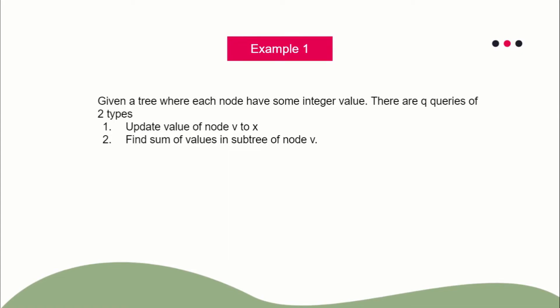I'll explain all of these ideas with certain examples. The first type of question you can solve using range query techniques on tree is: suppose you are given a tree and you have Q queries of two types — first, update the value of node V to X (each node has a certain integer value), and second, find the sum of values in the subtree of V. This is actually a point update.